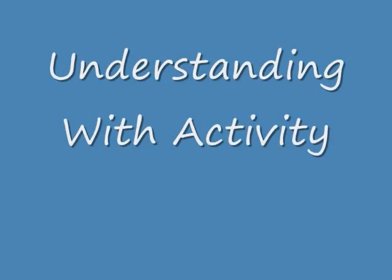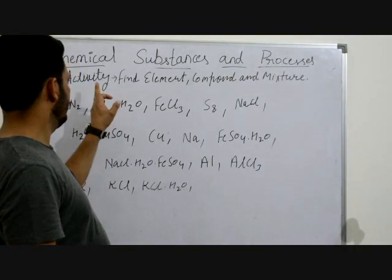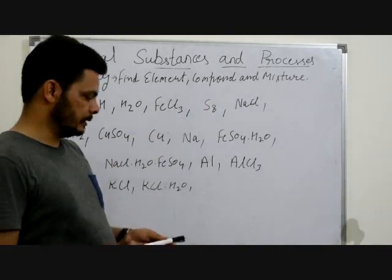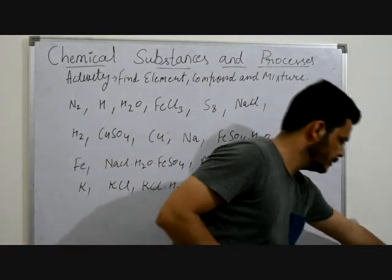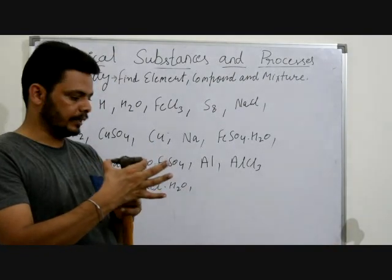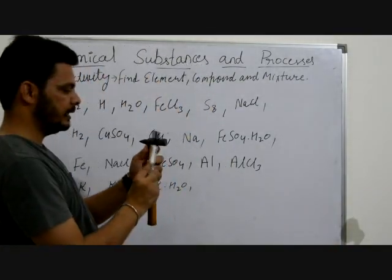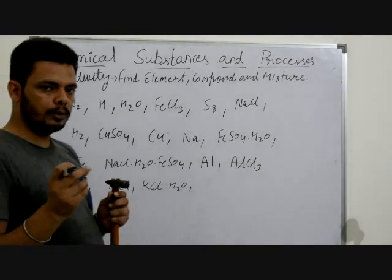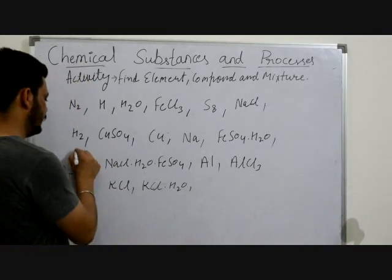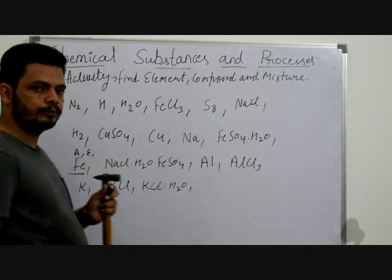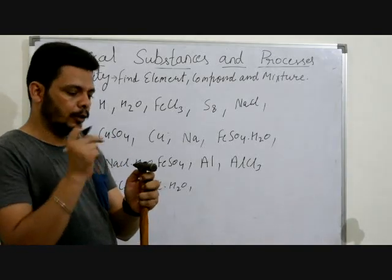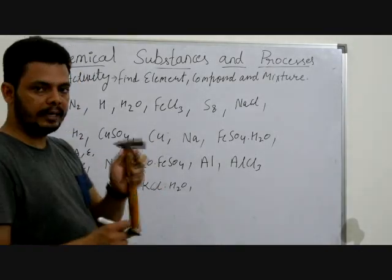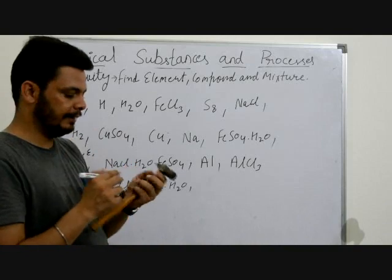Now let's find element, compound and mixture among some examples. Take a hammer with an iron piece — it is Fe. Since all the atoms will be of Fe, the same kind of atoms, it is called an element. Fe is both an atom and an element.